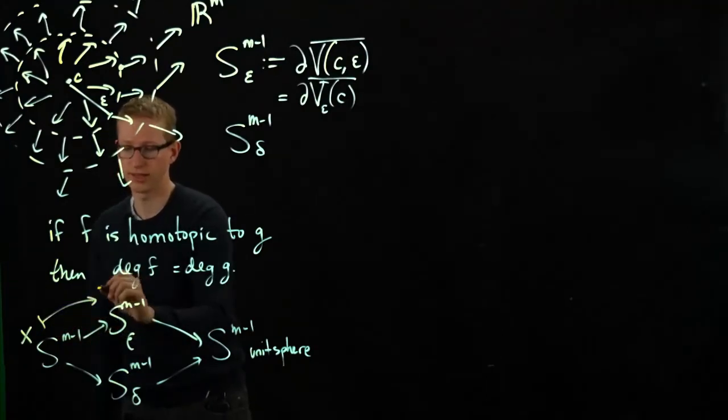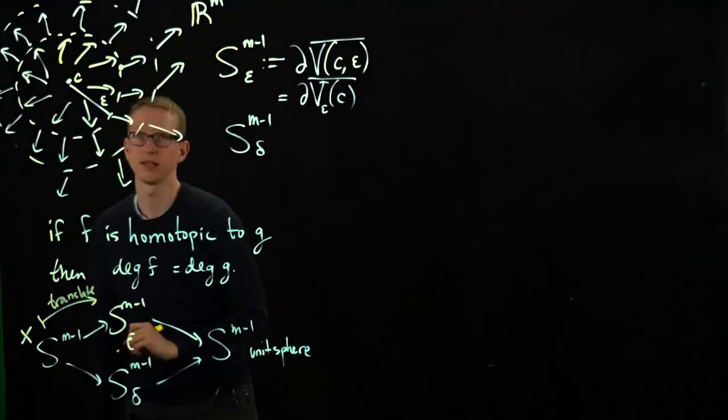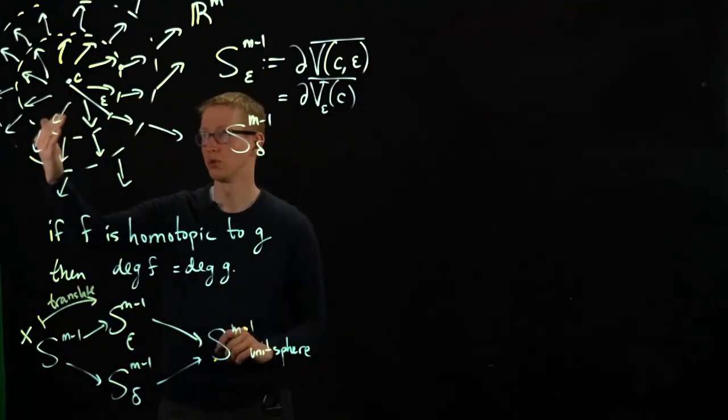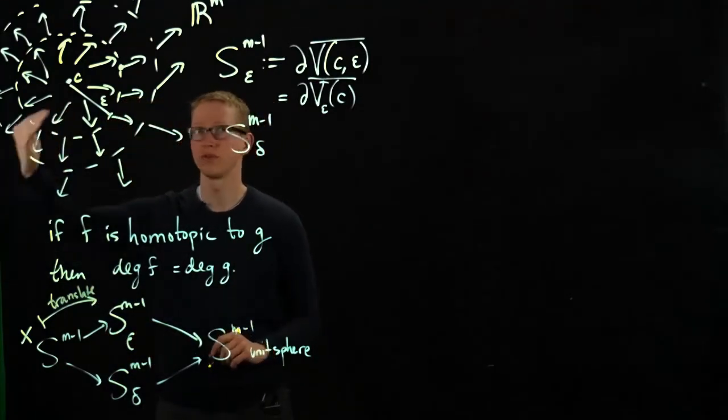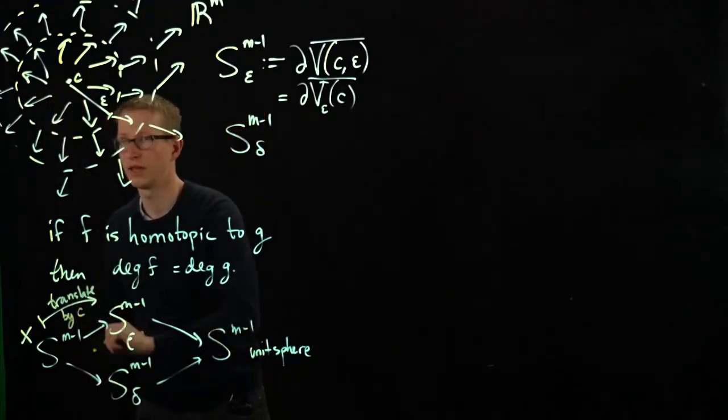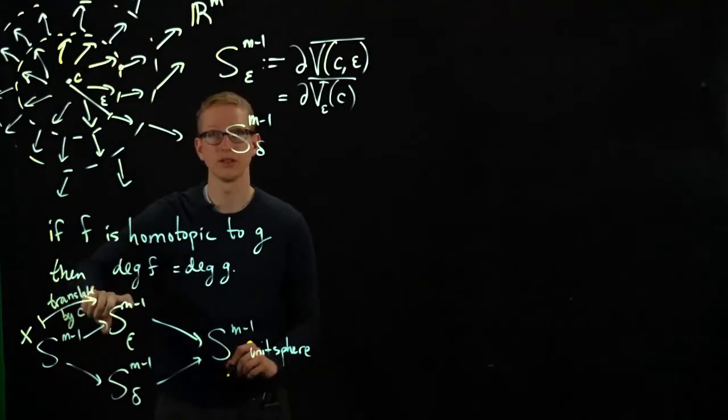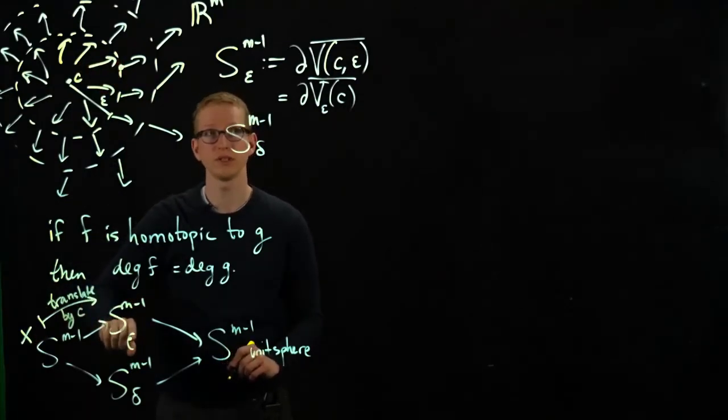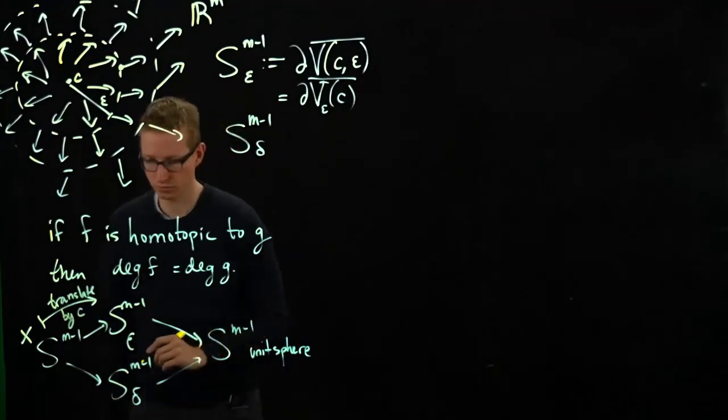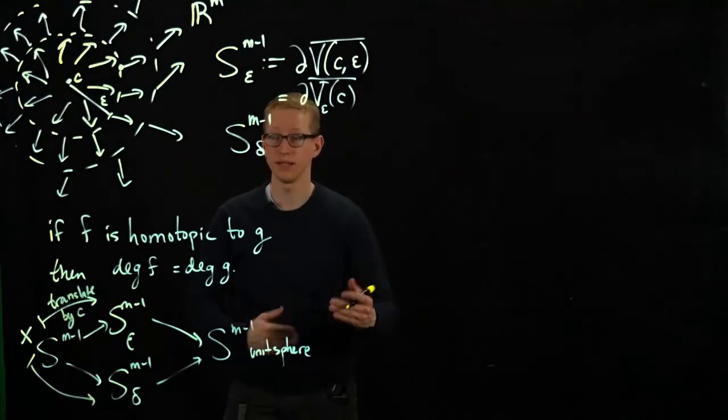And essentially all you're doing is you're translating it to, you're moving X over by C, so you shift by C. And then you scale it by epsilon so that it actually lands on the sphere of radius epsilon at the point C. So you do that. You can do the same thing here by translating it and then scaling it by delta.